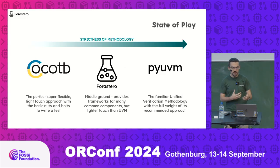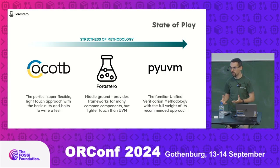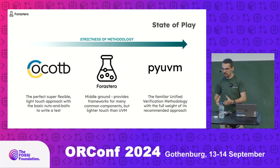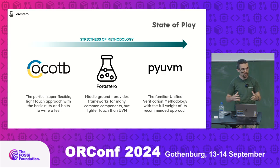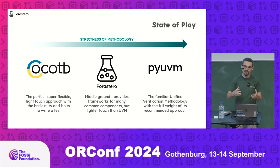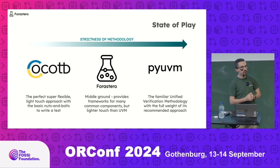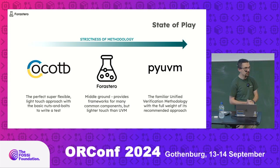To give you some idea of where Forestero fits in: CocoaTB is the perfect, super flexible framework, but it's a very light touch when it comes to methodology — it gives you the basis to write a single test, beyond that it's up to you. On the other end of the spectrum we have PyUVM, which brings the full UVM verification methodology — if you're happy with that, great, but there's an awful lot of strictness to it. We sit in the middle ground. We take bits from UVM — drivers, monitors, scoreboards — but give them to you in a much lighter touch way. You can partially or fully adopt them, and use a mix in your test benches.